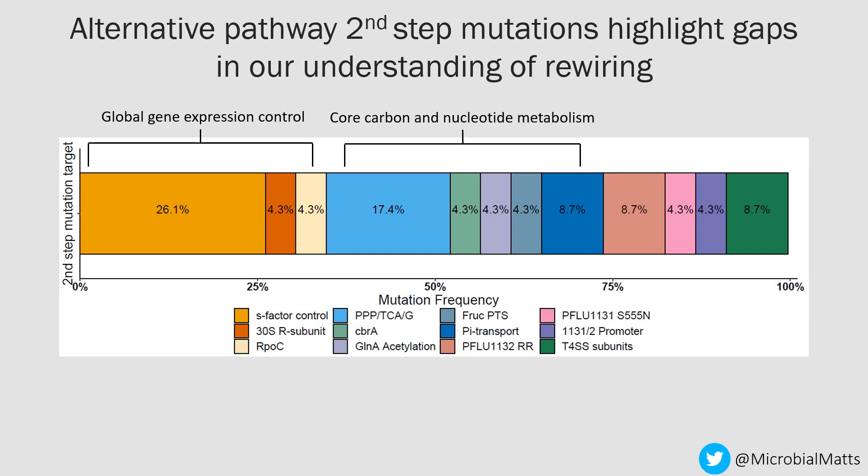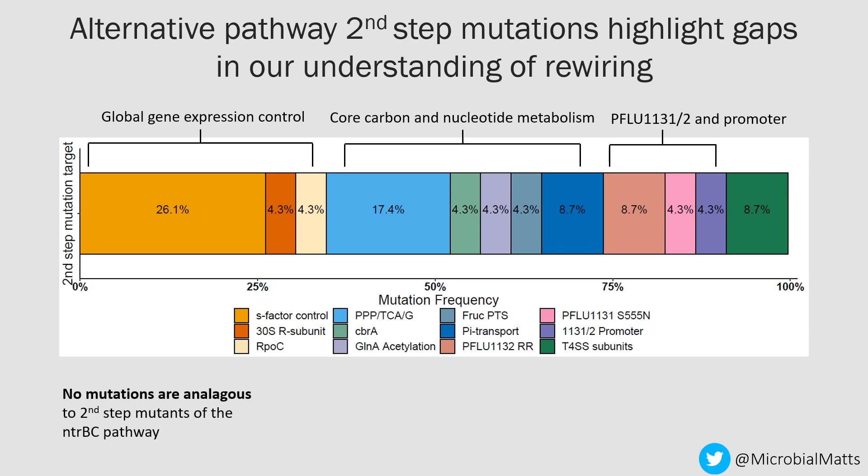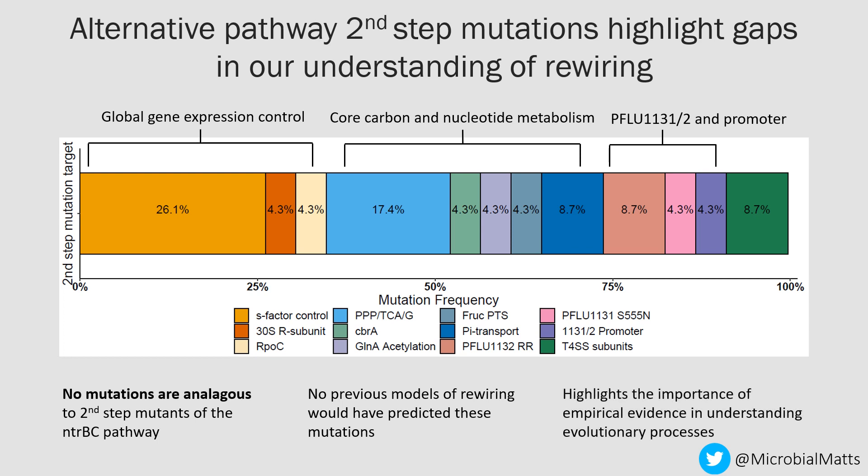I also see a set of mutations targeting core carbon and nucleotide metabolism, particularly the pentose phosphate pathway, TCA cycle, and glycolysis — again changing metabolism and gene expression for a large number of genes. Finally, there are mutations in PFLU1131, 1132, and the promoter — the transcriptional machinery being rewired. Interestingly, none of these mutations are analogous to the second step mutations of the original NTRB/C pathway. I don't see a single DNA binding domain mutation for the homologous PFLU1132 regulator. This really highlights the importance of thorough empirical evidence in understanding evolutionary processes.